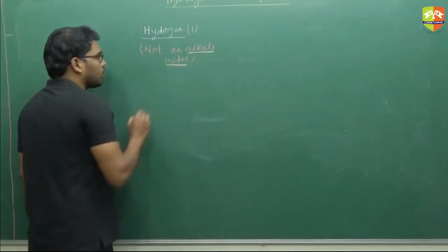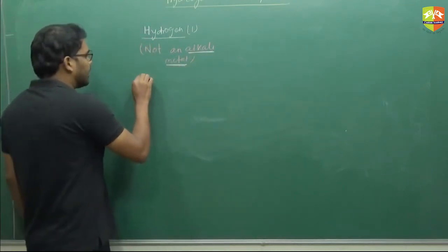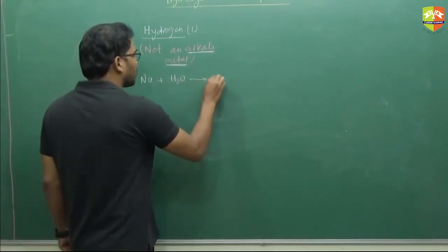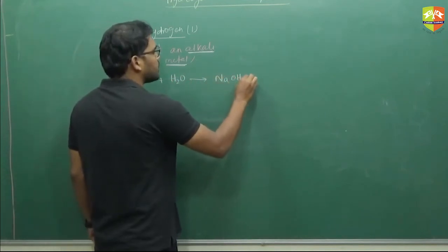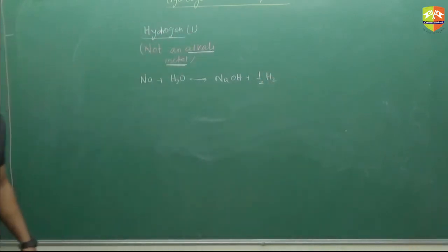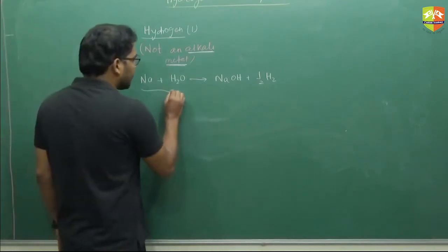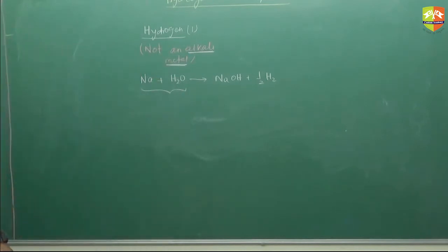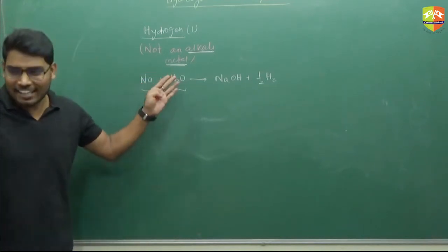Because the definition of alkali metal is: these are metals which react with water and form hydroxide. Like Na, an alkali metal, reacts with water and forms NaOH plus half H2. Hydrogen does not show this kind of reaction — it does not react with water. That's why it is not an alkali metal.